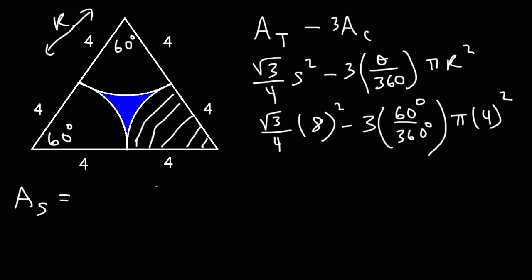So the area of the shaded region is going to be the square root of 3 over 4 times 8 squared. 8 times 8 is 64. And then 3 times 60 is 180, and then we have pi times 4 squared. 4 times 4 is 16. Now 64 divided by 4 is 16. So this is 16 square root 3.